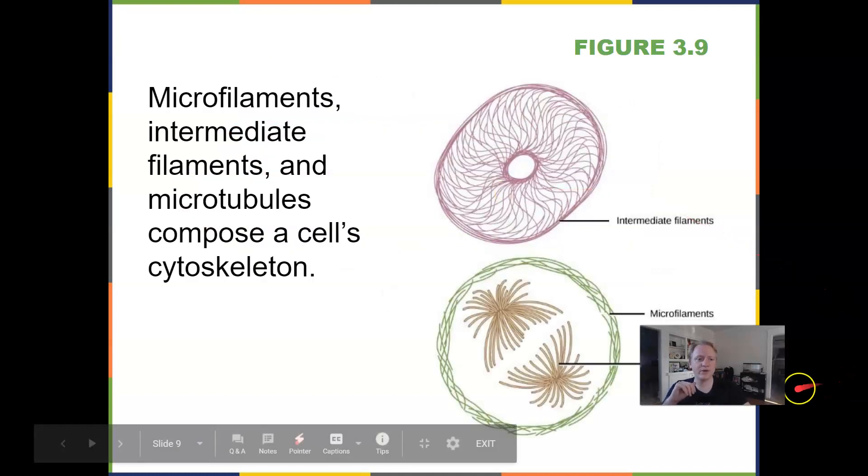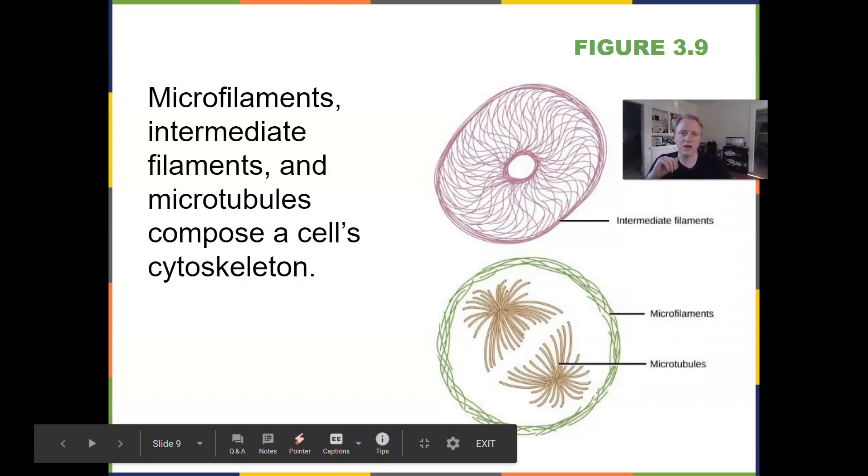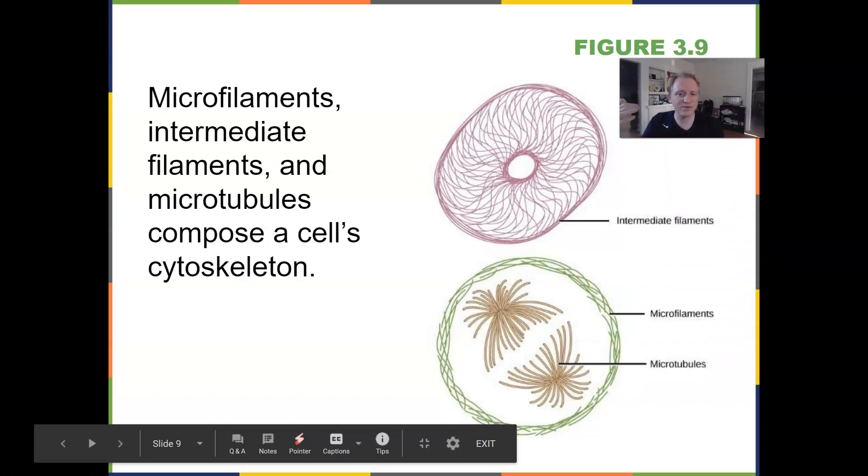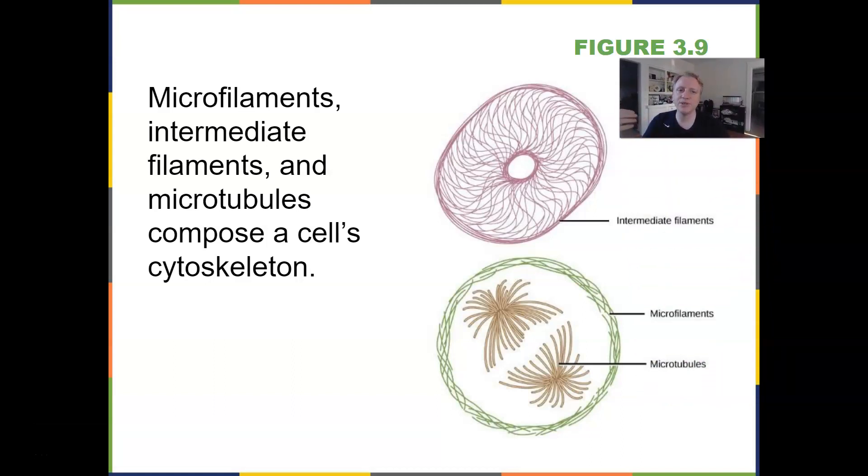The next thing that we're going to talk about are microfilaments, intermediate filaments, and microtubules. Those things compose a cell's cytoskeleton. If you take all of the organelles out of a cell, you are left with just cytoskeleton. And you have other stuff, too, still left in here. But if you took everything else out of the cell, you're still going to have a cytoskeleton.